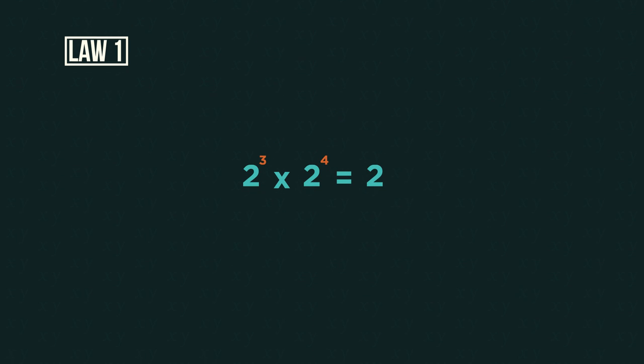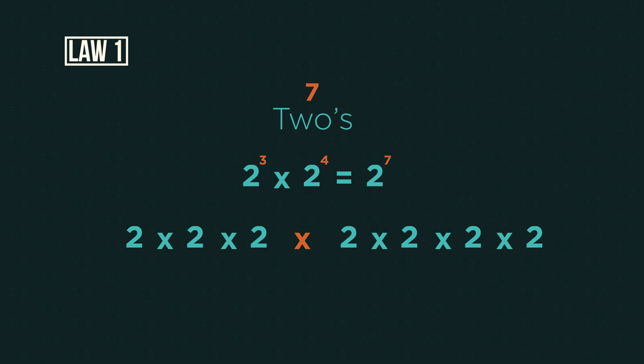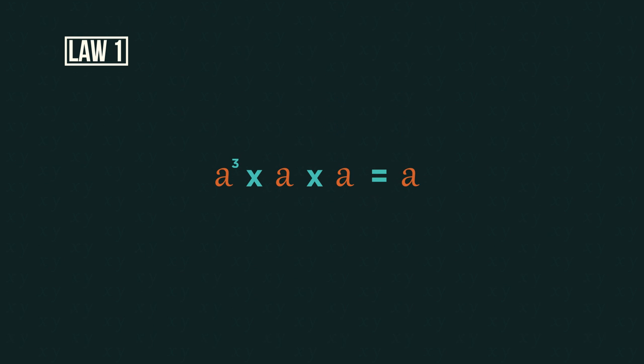So three plus four is seven because really it is two, three times, multiplied by two, four times, giving us seven twos. And three plus two plus one is six. Looking at the final example, see how we treat the numbers and the indices differently. So we do four multiplied by five first and add the indices second.